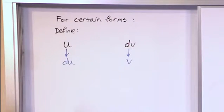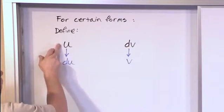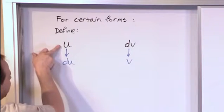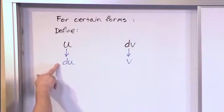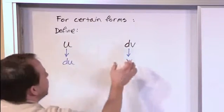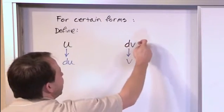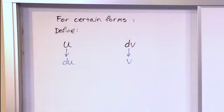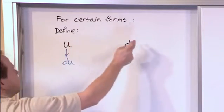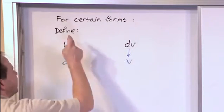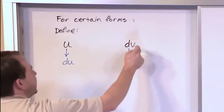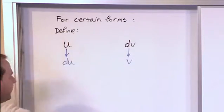At the end of the day, you're going to take part of your integral and choose it to be equal to u, and then you're going to calculate the derivative and it's going to be called du. And then whatever is left over in the original integral, you're going to call it dv, and you're going to integrate this and you're going to find v. So at the end of the day, you should have u and du and you should have v and dv, all four pieces of information.